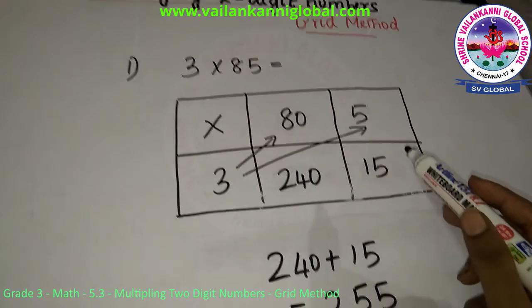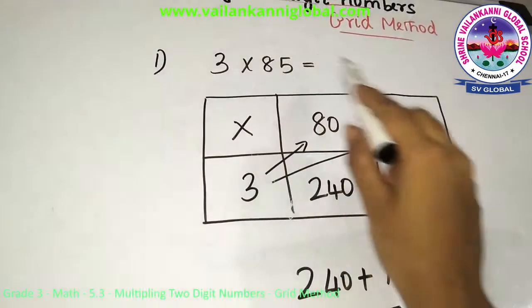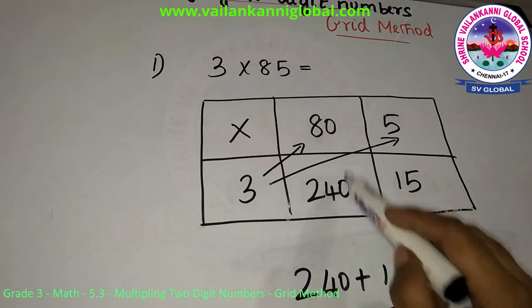So using the grid method you can multiply easily. Write the first number and split the second number. Then multiply and add and write the answer.